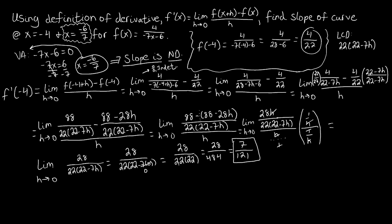What that means in the grand scheme of this problem is that the slope of the curve f of x equals 4 over negative 7x minus 6, at x equals negative 4, is 7 over 121.